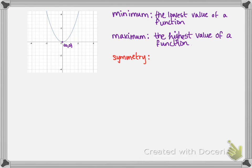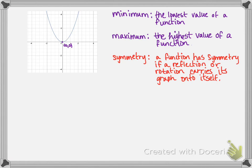Symmetry is another attribute. A function has symmetry if a reflection or rotation carries its graph onto itself. So here with the quadratic, we do have a line of symmetry. And this line is at x equals 0 for this particular quadratic function.